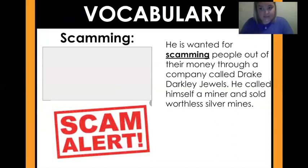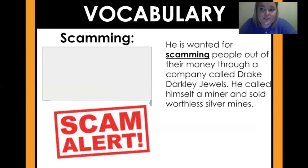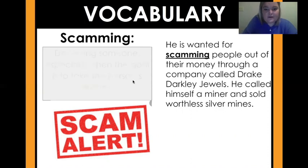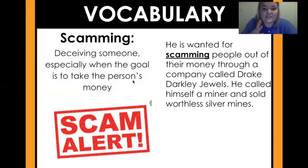That is what your assignment is going to be on in Seesaw. The first word you can choose from is scamming — I put that little picture at the bottom, a scam alert. The sentence from the text is: 'He is wanted for scamming people out of their money through a company called Drake Darkly Jewels. He called himself a miner and sold worthless silver mines.' Scamming means you deceive someone, especially when the goal is to take the person's money.